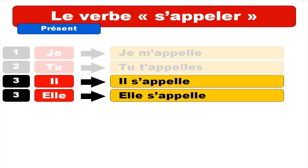And then come il and elle. So masculine form: il. Usually for il or for elle, third person of the singular, you get 'se.' But then, as previously, we are starting with a vowel, so the 'e' disappears, and you get il s'appelle. Repeat. Il s'appelle. And then the feminine form: elle s'appelle. Repeat. Elle s'appelle.